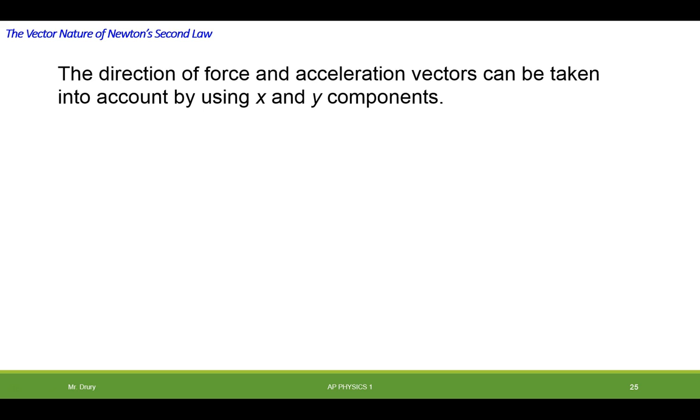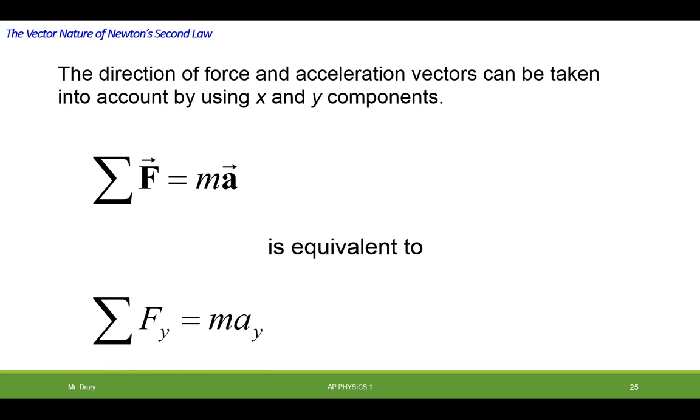Now, since forces and accelerations are vectors, we can actually break both the accelerations and the forces into their vector components. For example, we can take the sum of the forces equal to mass times acceleration. It's really equivalent to the sum of the force in the y is equal to mass times acceleration in the y, and sum of the force in the x is equal to mass times acceleration in the x. By the way, notice mass doesn't have an x or a y because it's just a scalar.